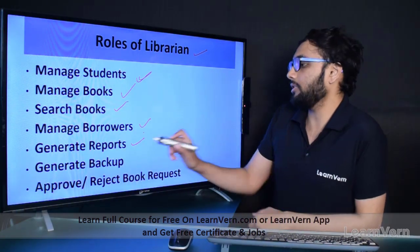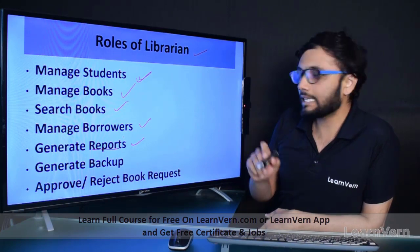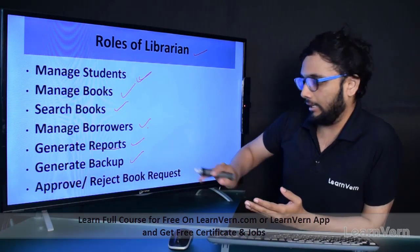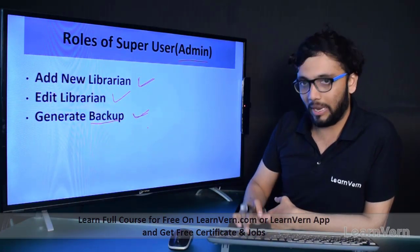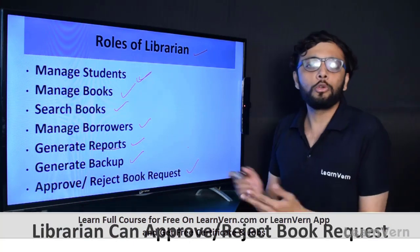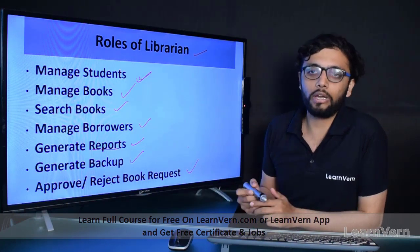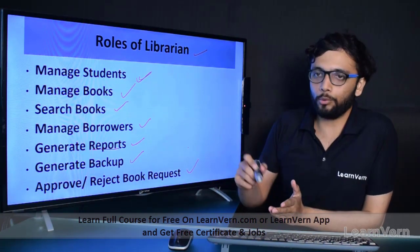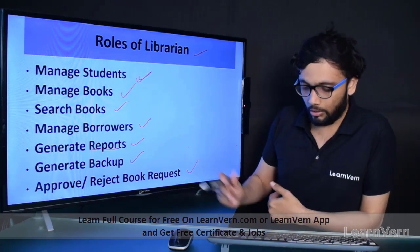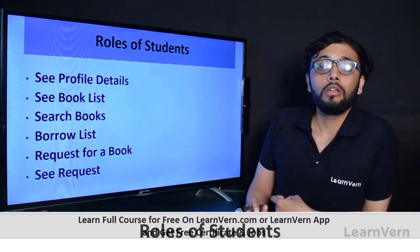Librarian can generate reports - how many books were returned last month or this month, how many books were borrowed. This generates a report of the whole statistics. After that, backup - which we have already seen. And finally, approve or reject book requests: users can request to borrow a book and the librarian approves or rejects the book request. This is a standard practice to list down the roles of the library.